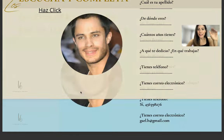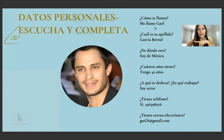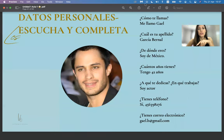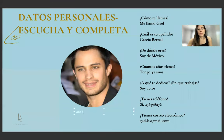Vamos a controlar — here are the answers: me llamo Gael García Bernal, soy de México, tengo 42 años, soy actor. He says the phone number in hundreds: 456-398-276. You can also say the digits individually. ¿Tienes correo electrónico? Sí, gael.b arroba gmail.com. I forgot to teach you the dot — punto is the dot. We don't say 'dot', we say punto.